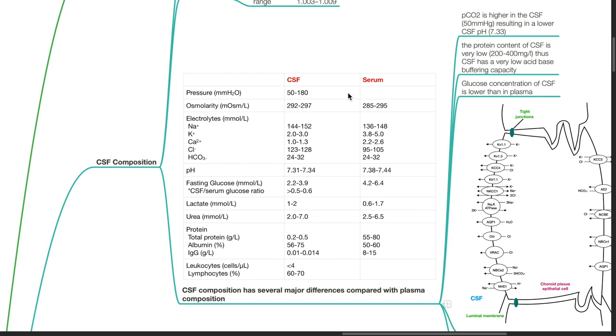CSF and serum bicarbonate is equivalent at 24 to 32 mOsm per liter. CSF pH is 7.31 to 7.34, while serum pH is 7.38 to 7.44.